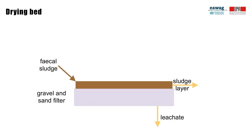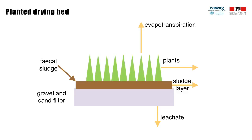Planted drying beds are similar to unplanted drying beds. They consist of a gravel and sand filter bed; sludge is loaded onto the top, and the leachate percolates through the bed and is drained away in a perforated pipe. In planted drying beds, the filter bed is used for growing plants. This means that in addition to evaporation, dewatering is occurring through plant transpiration. Both of these together are called evapotranspiration.